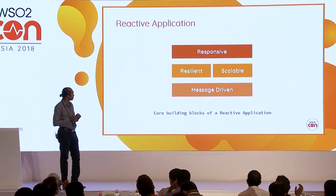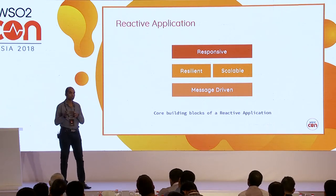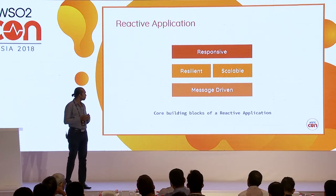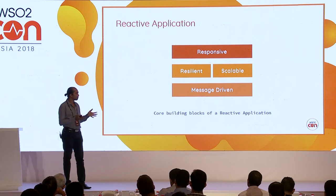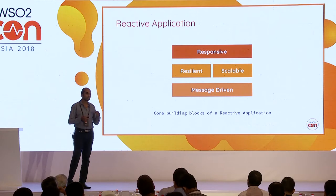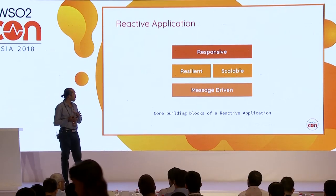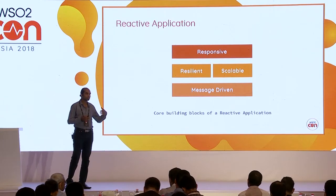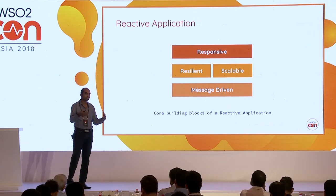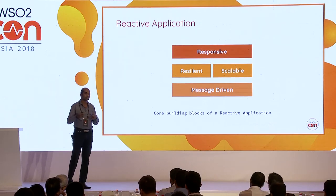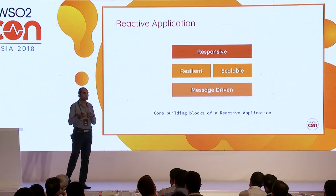When talking about a message-driven architecture, there are two categories: event-driven and actor-based. I find the event-driven approach more attractive. In the actor-based approach, instead of an event, a particular system does a direct command to another system saying 'do this particular work.' In an event-based system, we already talked about how easy it is to scale and add new features. And if you look at event-carried state transfer, you'll see how well you can make your application resilient.